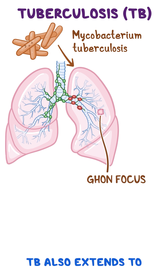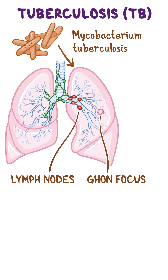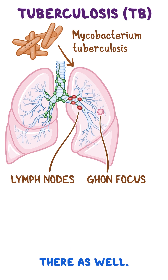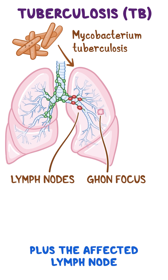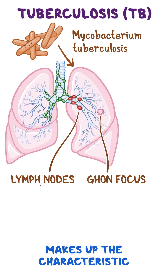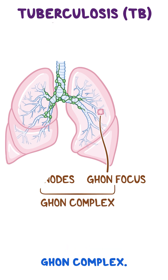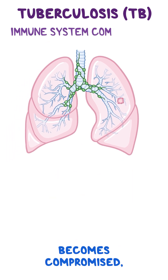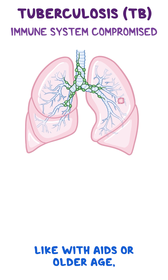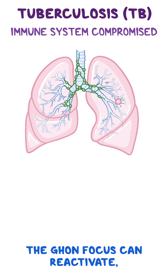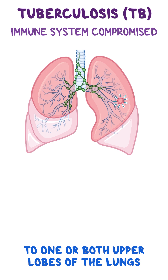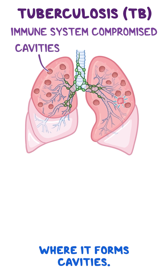TB also extends to nearby hilar lymph nodes, causing caseous necrosis there as well. The Ghon focus plus the affected lymph node makes up the characteristic Ghon complex. If the immune system becomes compromised, like with AIDS or older age, the Ghon focus can reactivate, and the infection can spread to one or both upper lobes of the lungs, where it forms cavities.